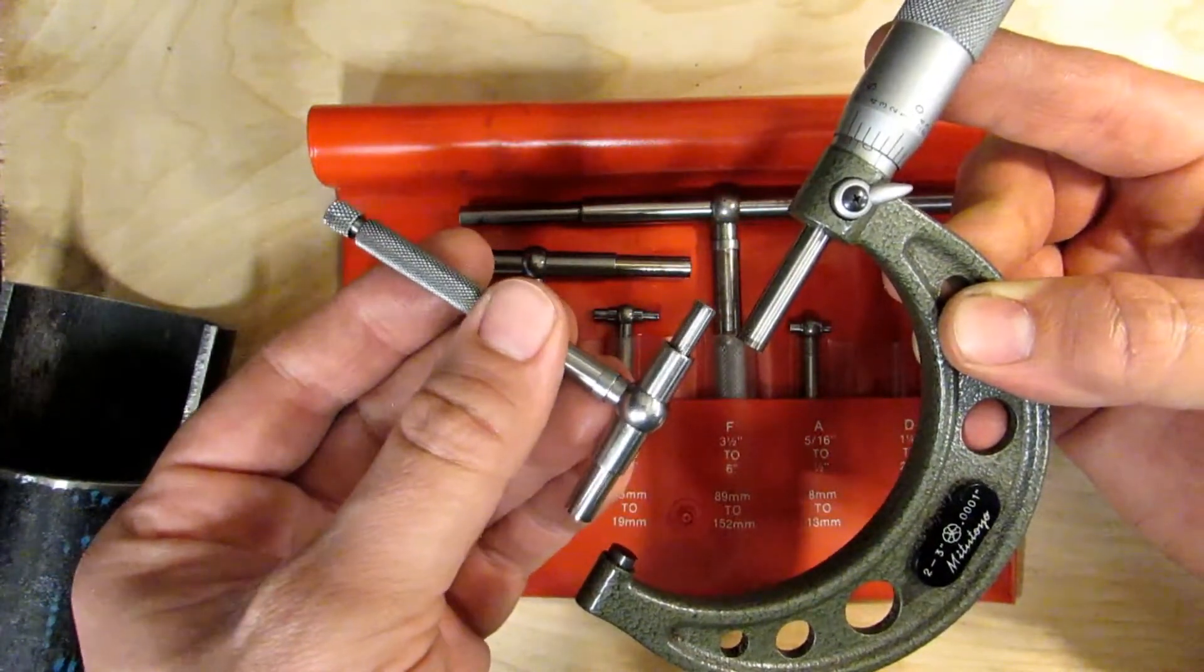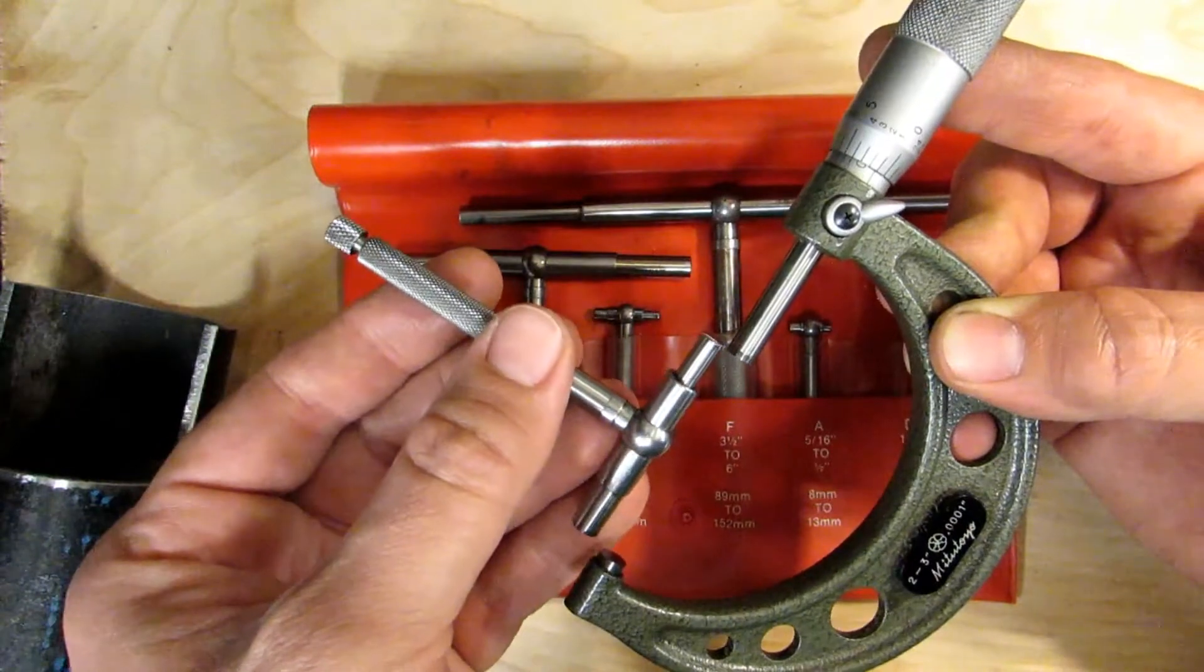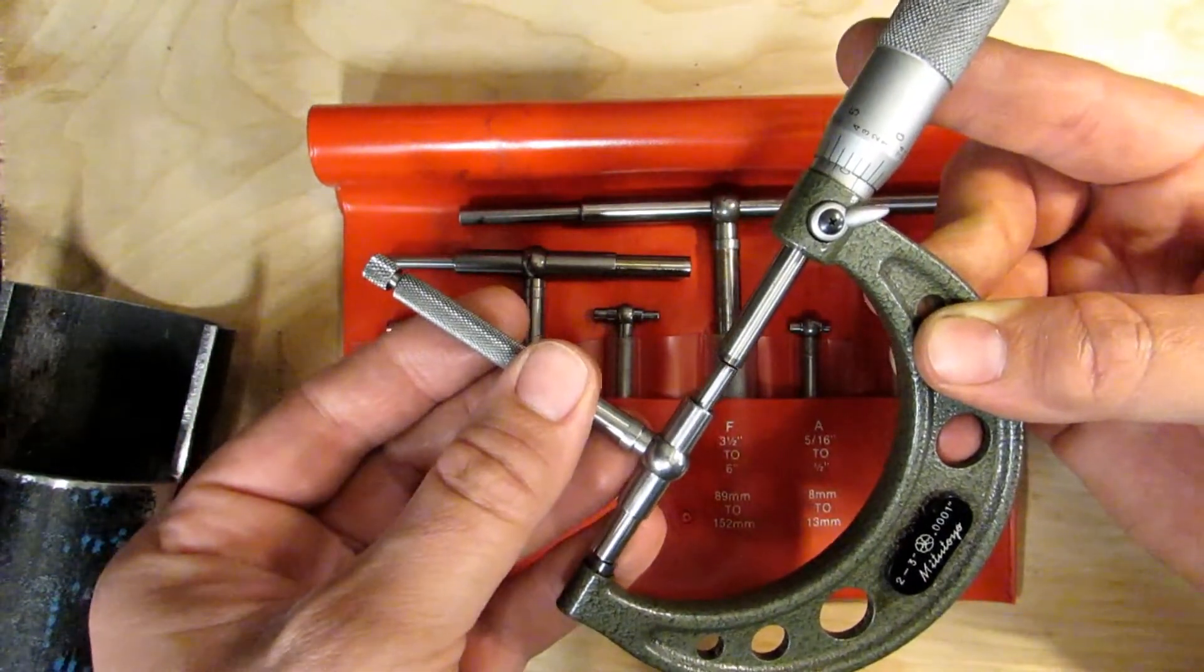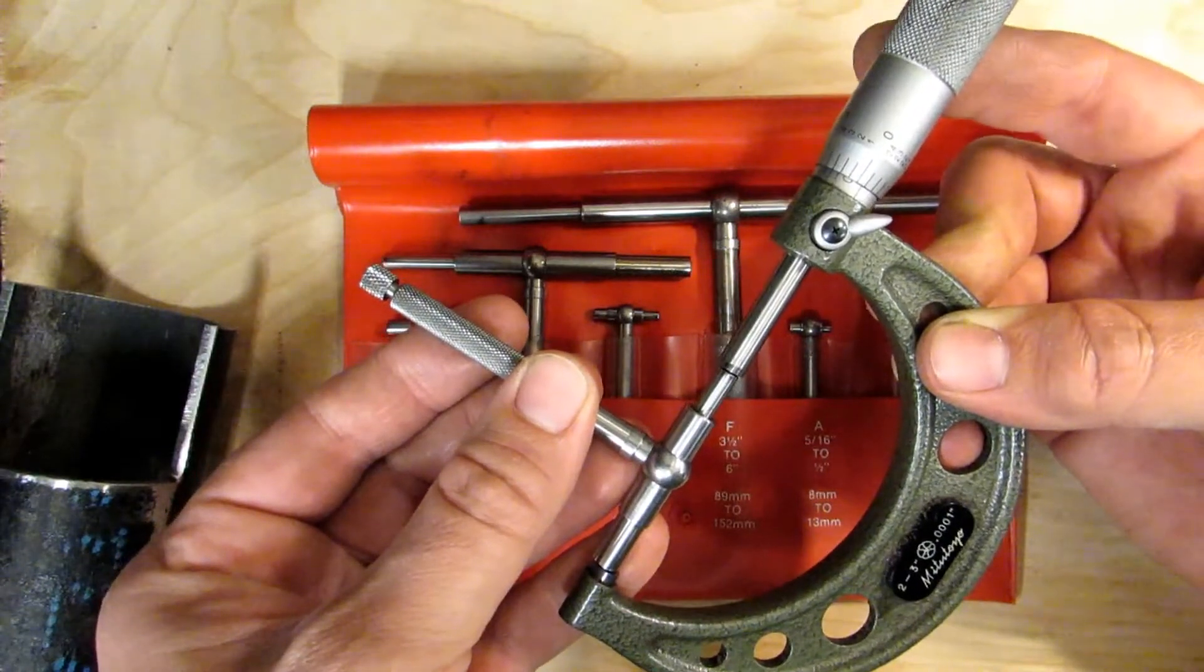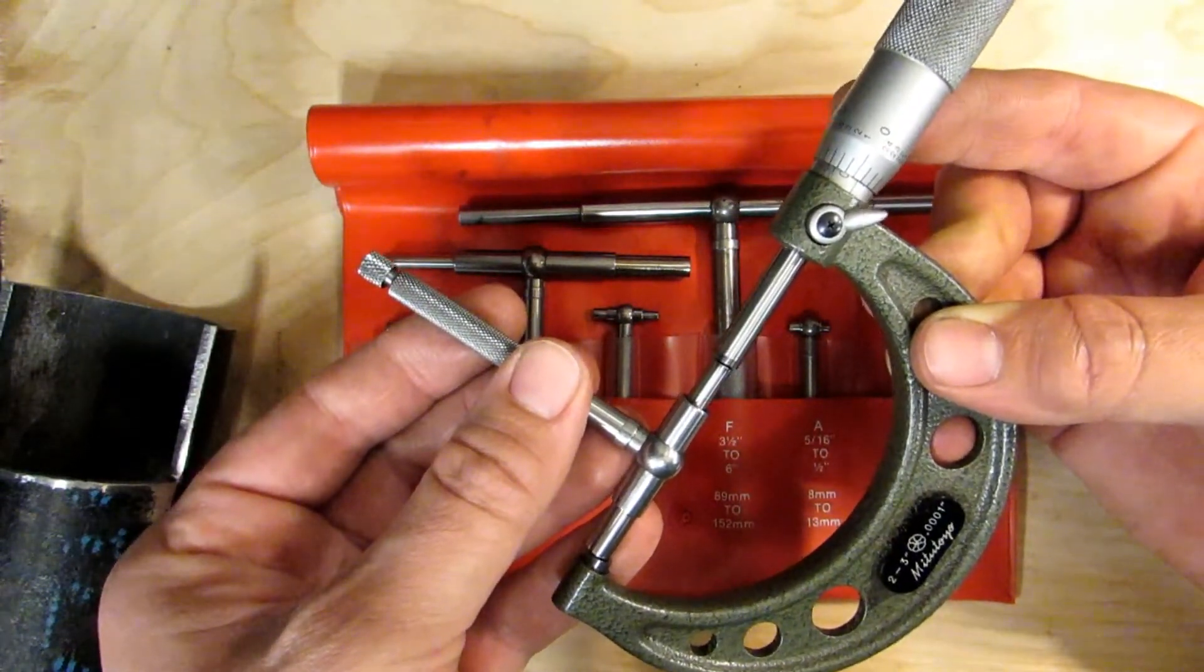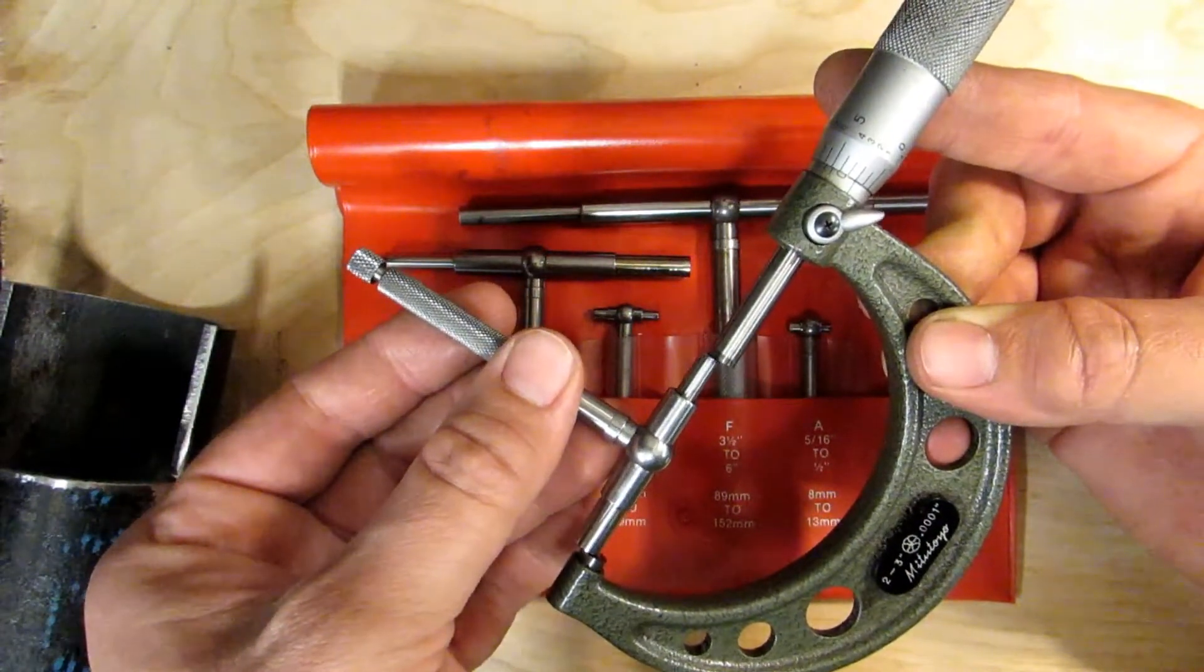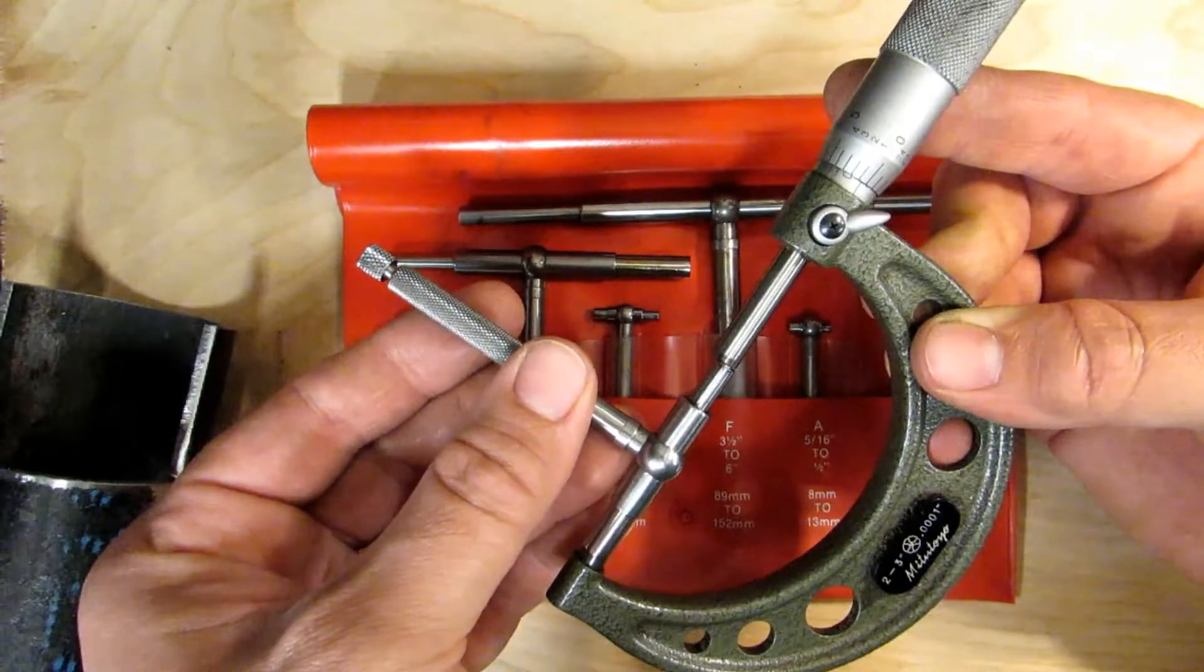Part of that is people not rocking the head of the telescoping gauge back and forth as they're trying to measure it. If you don't do that, you really don't have the feedback necessary through the micrometer to tell where you're actually hitting that gauge. So rocking the head back and forth allows you to slowly move in and you'll feel it when it first starts to grab.